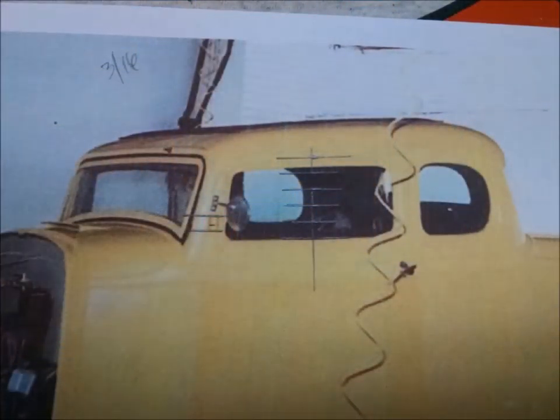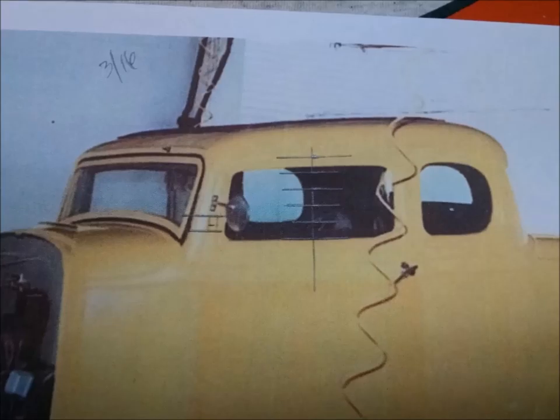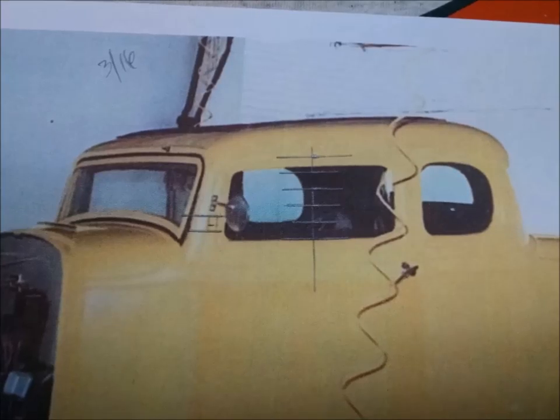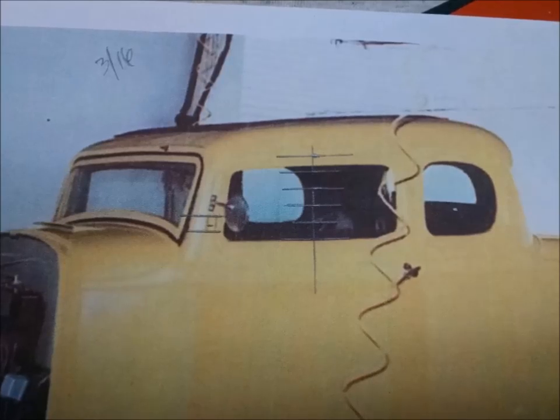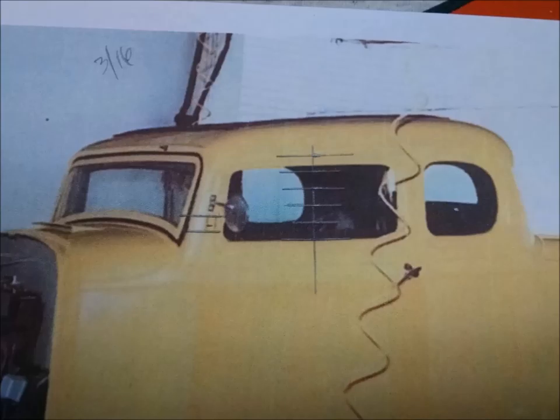One of the difficult things about working from archival photographs is there's no scale to the photographs. To determine how much to chop out of the roof, we had to find a common object to the real car and to the model, which turned out to be the upper door hinge.